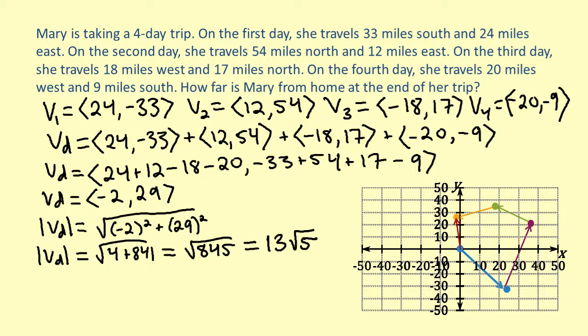This means that Mary is 13 times the square root of 5 miles away from her starting point by the end of her trip.